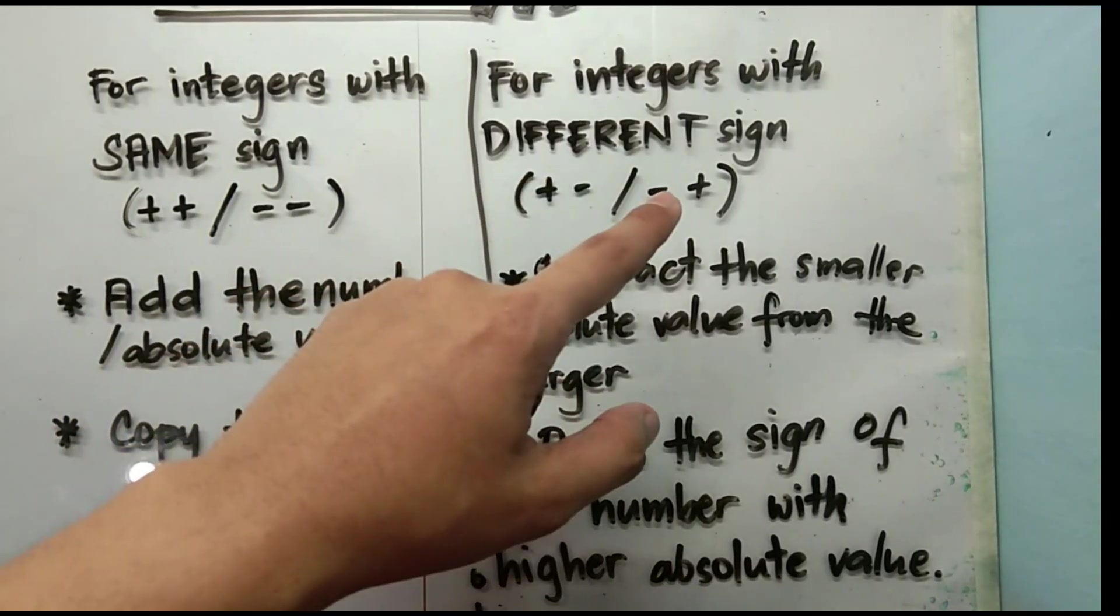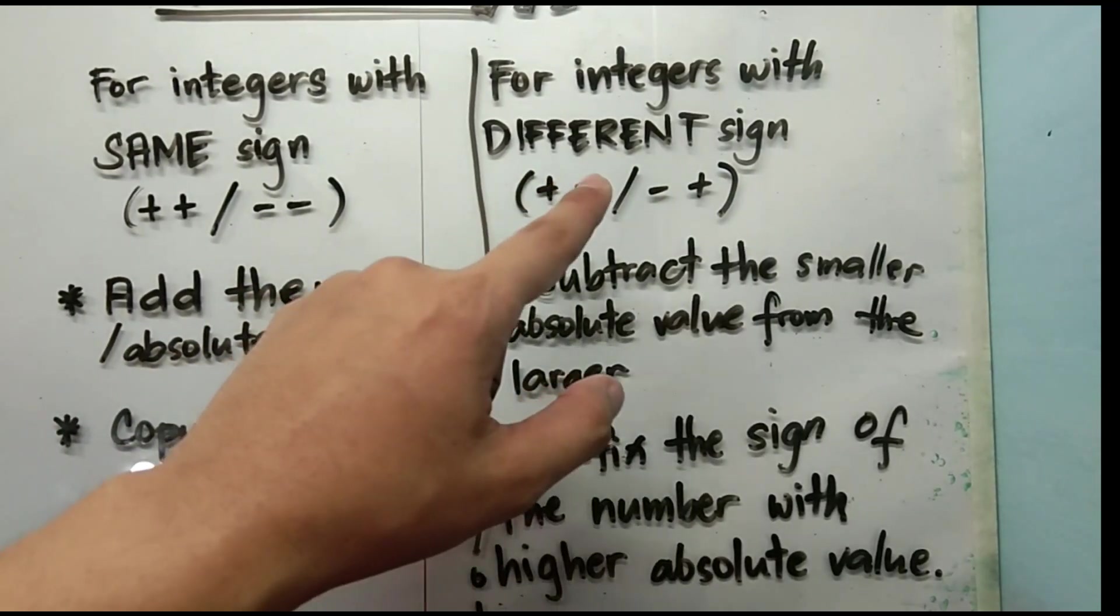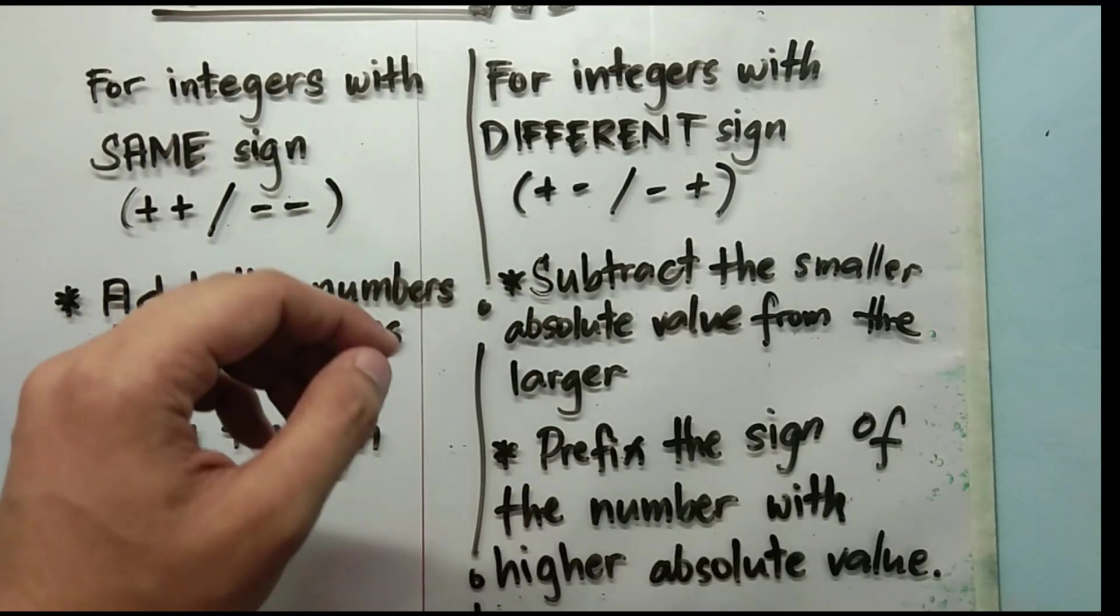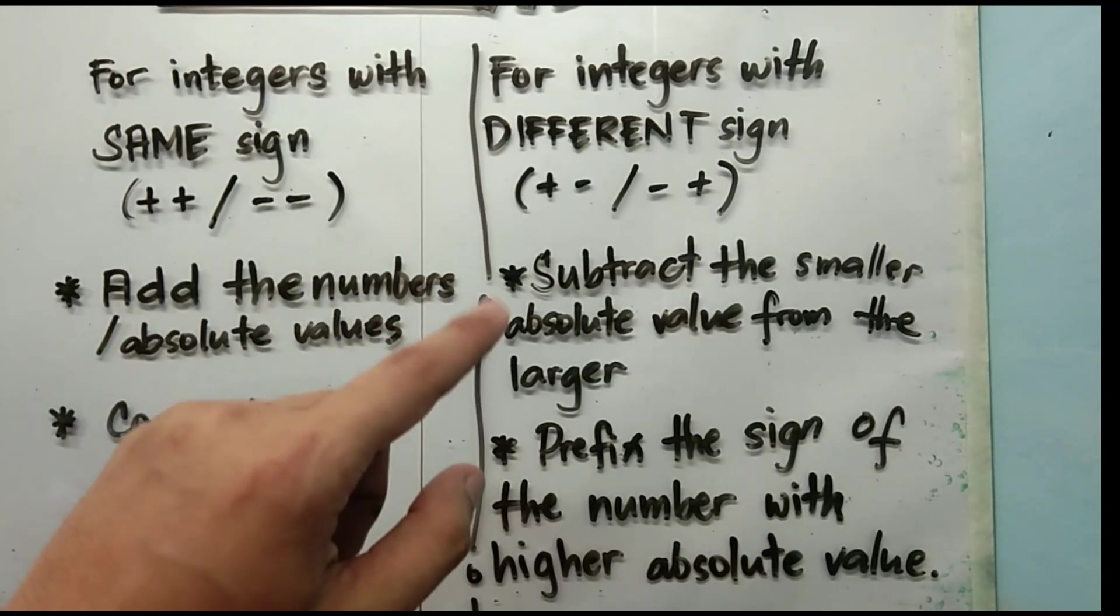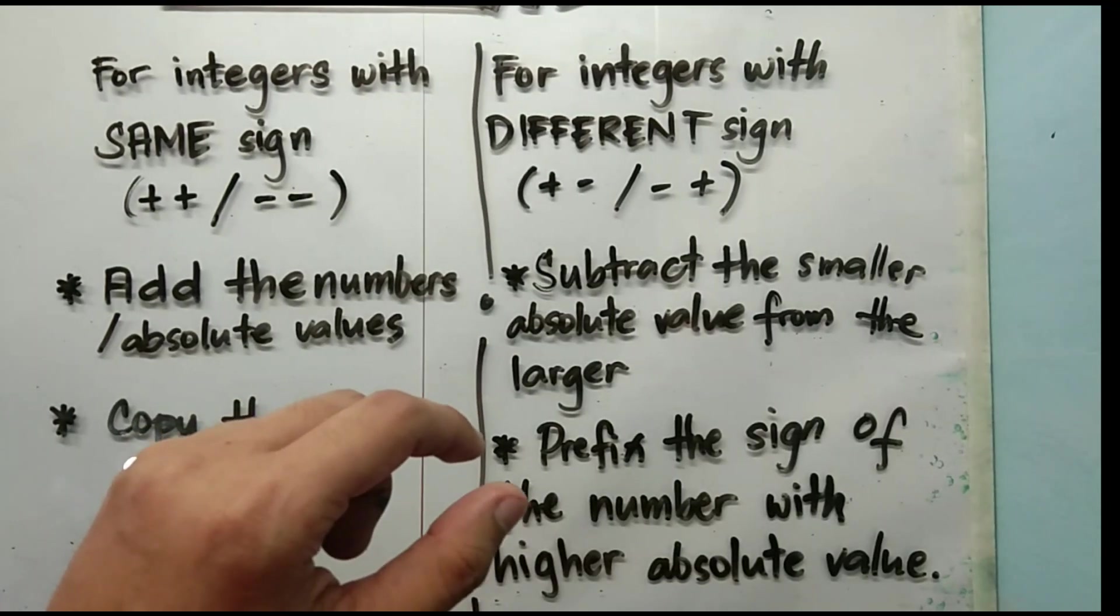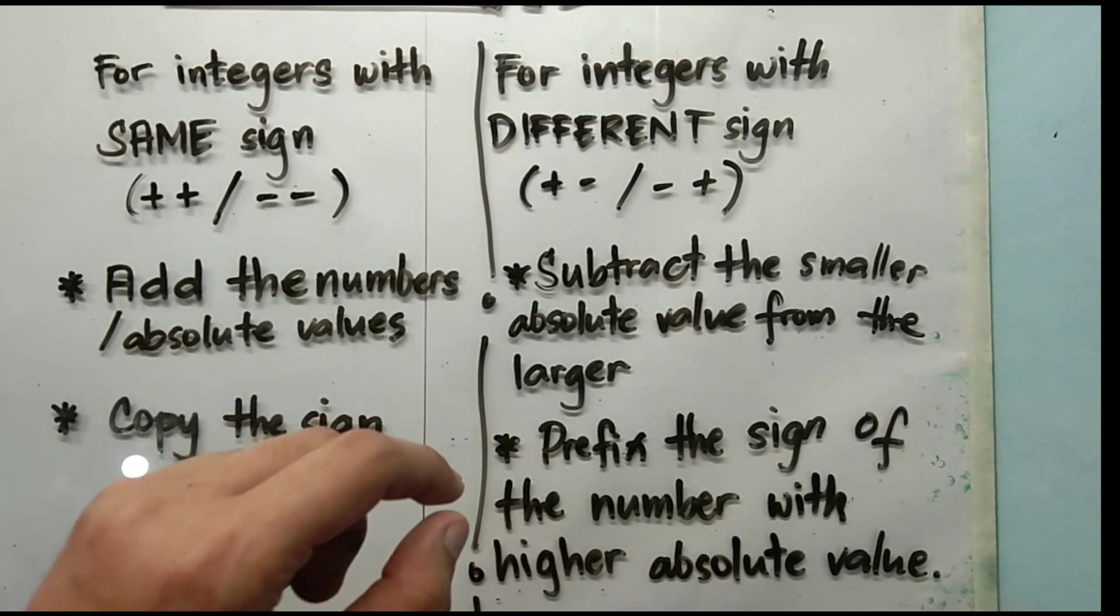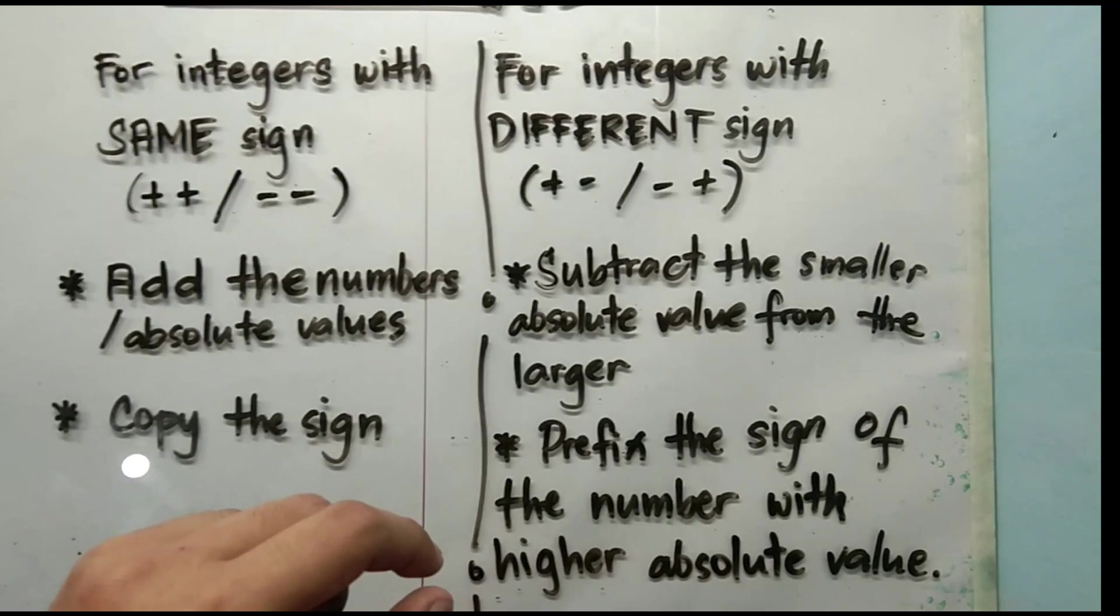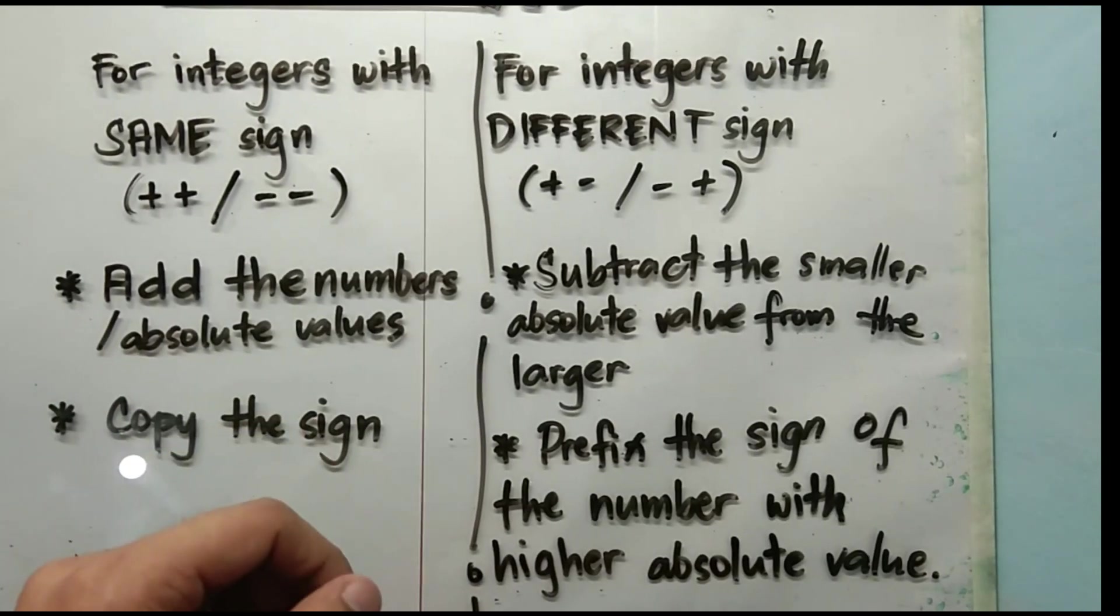Now, for integers with different sign, one is positive, the other one is negative or vice versa. You need to subtract the smaller absolute value from the larger, then prefix or copy the sign of the number with higher absolute value. Let's try these examples.